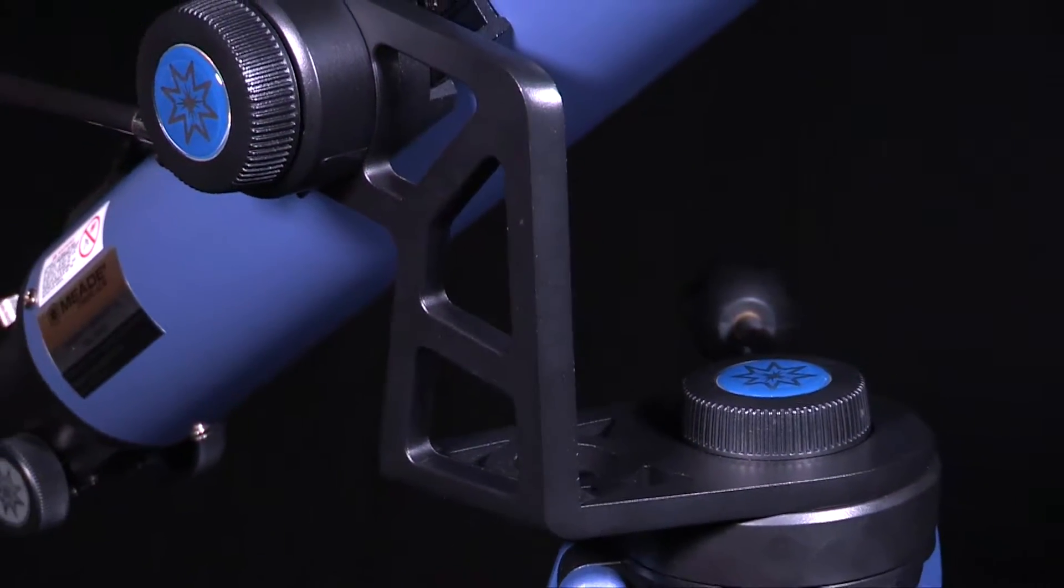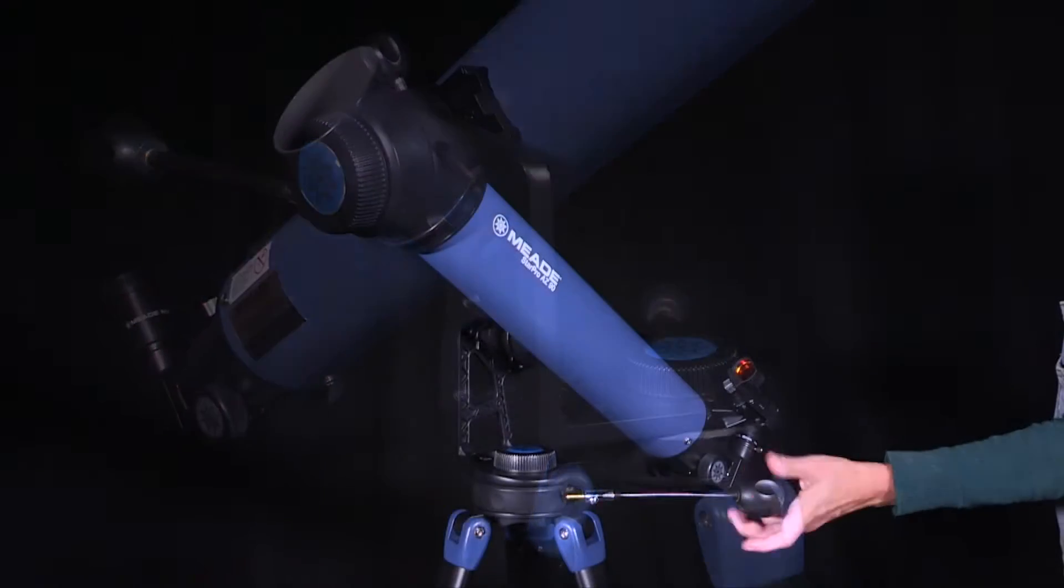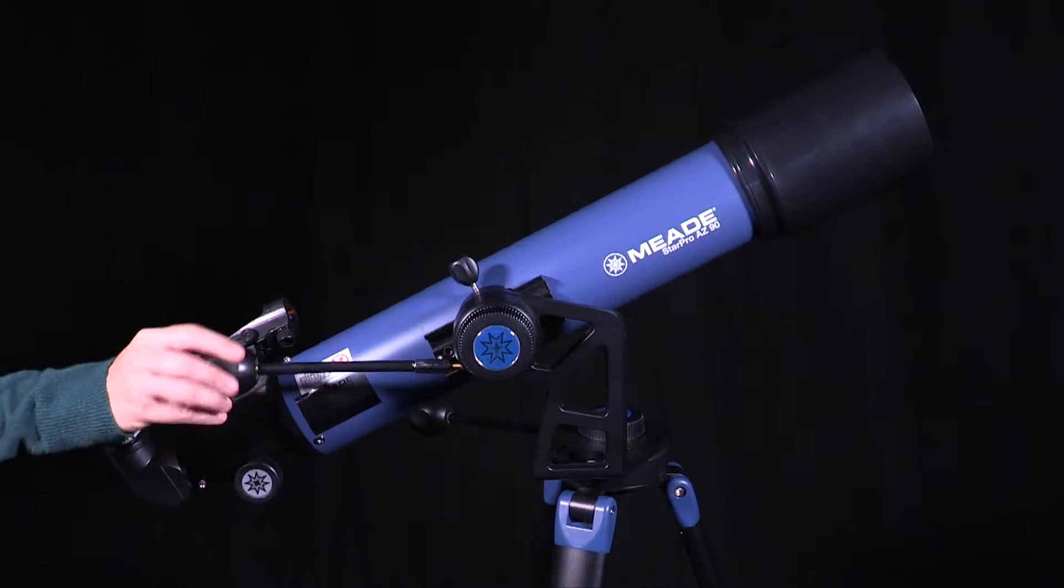The StarPro AZ features a newly designed single arm alt azimuth mount with slow motion control cables on both axes, making your observing experience a breeze.